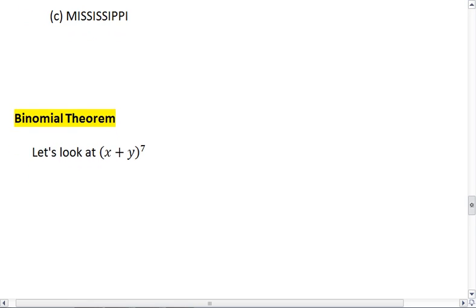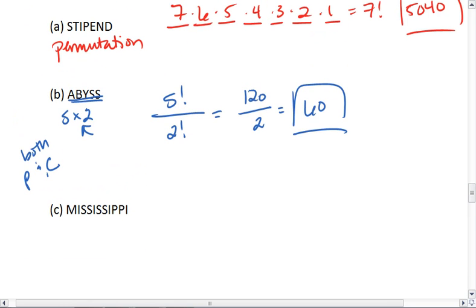Alright, how about this one, Mississippi. In Mississippi we have 1, 2, 3, 4, 5, 6, 7, 8, 9, 10, 11 letters. My numerator is 11 factorial. Now I have to divide by repeating letters. I realize I have 4 i's. I have 4 s's. And I have 2 p's.